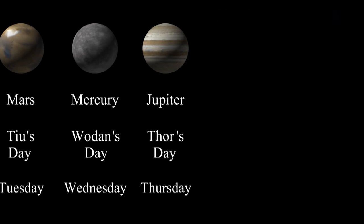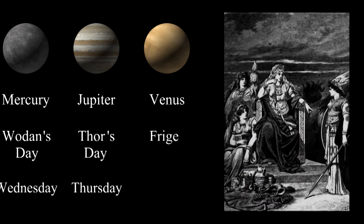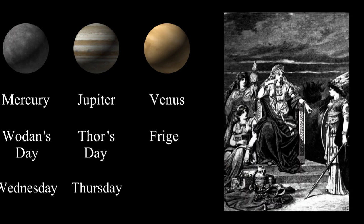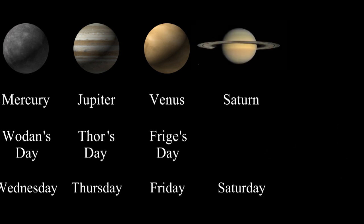Friday comes from Venus, the goddess of beauty. The Norse have Frigg, the wife of Odin, and Frigg gives us Friday. Saturday comes from Saturn — that's Saturn's day, Saturday.